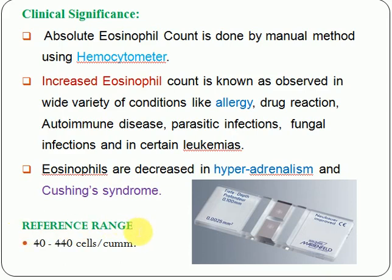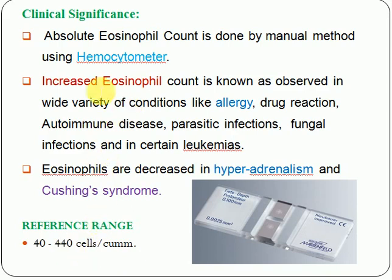The normal reference range of eosinophils is 40 to 400 cells per cubic millimeter. If the eosinophil count is below 40, it is known as eosinopenia, seen in hyperadrenalism and Cushing's syndrome. If it is more than 440 cells per cubic mm, it is known as eosinophilia, seen in allergic conditions, autoimmune disease, and so on.